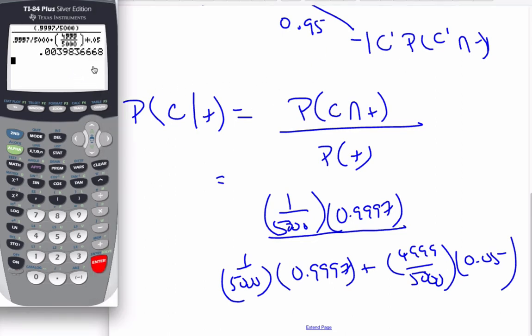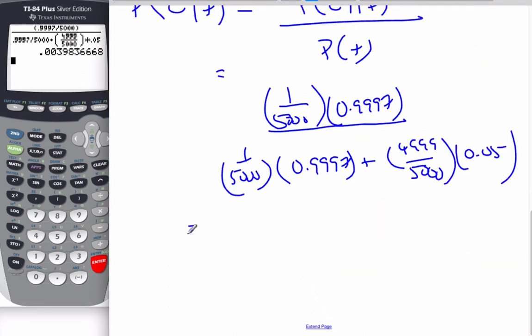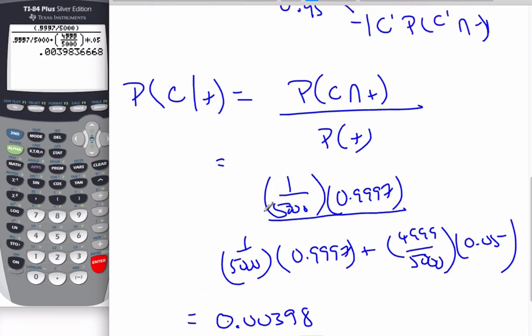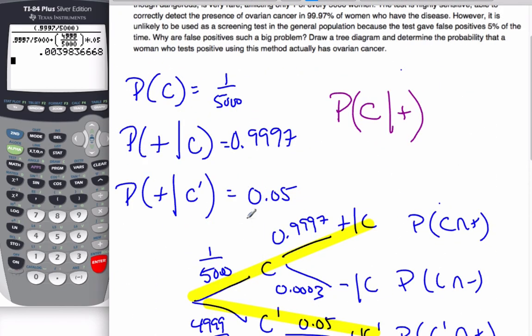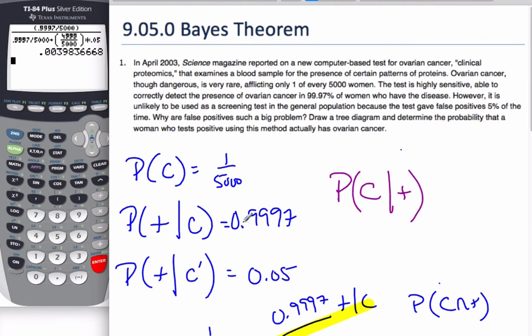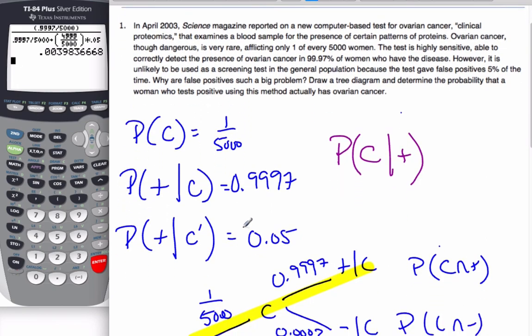So as you can see, when I do the probability, it ends up that less than 1% of the people have cancer when they test positive. So that's 0.00398. So there would be very few people that would actually have cancer even though they've tested positive. And so even though this test is very reliable in catching people who have cancer, it catches too many people that do not have cancer. And that is the scenario of Bayes' theorem.